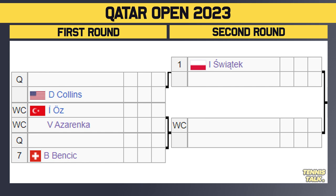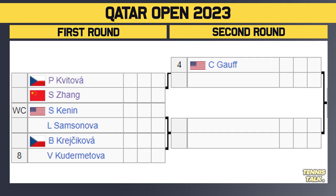The winner of that match will take on either a qualifier or the seventh seed Bencic in the second round. Bencic has had a great season so far. Then we've got Gauff, the number four seed, getting a bye in the first round. She awaits the winner of Kvitova versus Song. Then we've got Kenin, the wild card, taking on Samsonova, who's in very good form. The winner of that match will take on either Krejčíková or the number eight seed Kuromitova in the second round. Very fun top half of the draw — stacked event with a lot of unseeded players in the top 20, and really good matchups in the first two rounds.